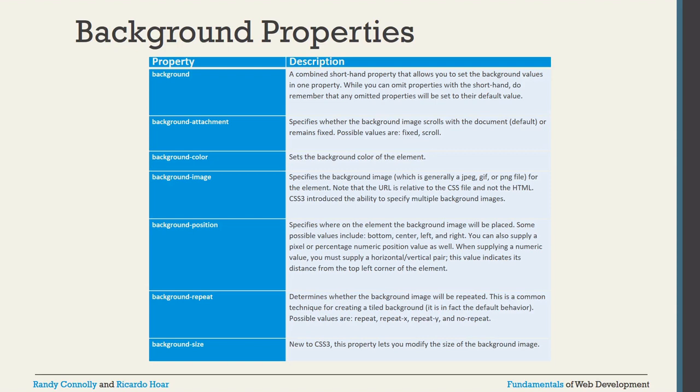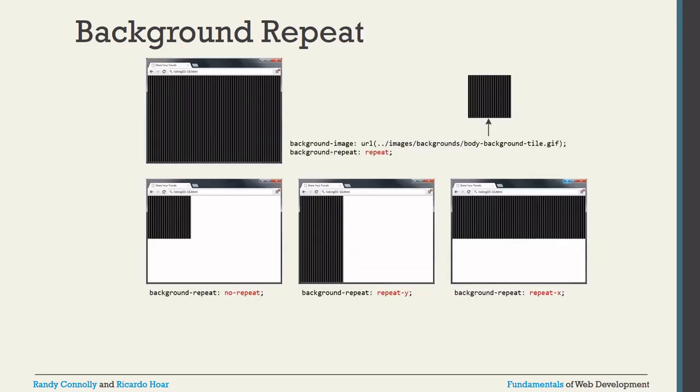Background-position lets you manage the image position horizontally and vertically. Background-attachment allows you to fix the image in the background while scrolling the document. Background-size lets you adjust the image size. For background-image, the property syntax is: background-image: url() — and inside the url() you provide the path to your image file, for example '../images/background-title.gif'.